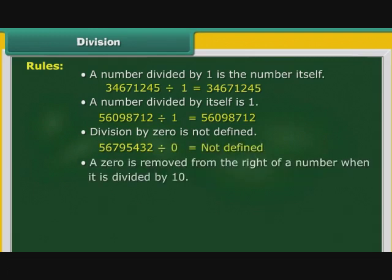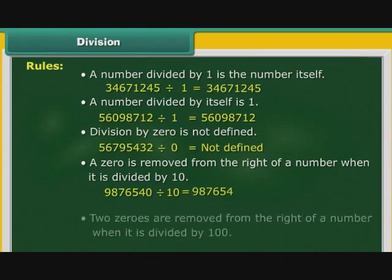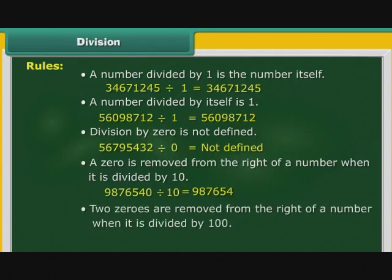A zero is removed from the right of a number when it is divided by 10: 9876540 ÷ 10 = 987654. Two zeros are removed from the right of a number when it is divided by 100: 41236500 ÷ 100 = 412365.